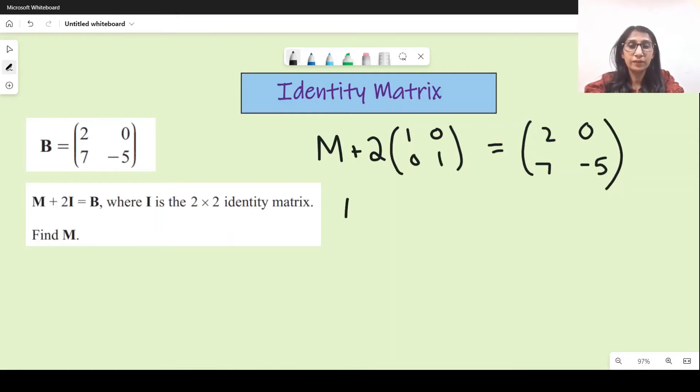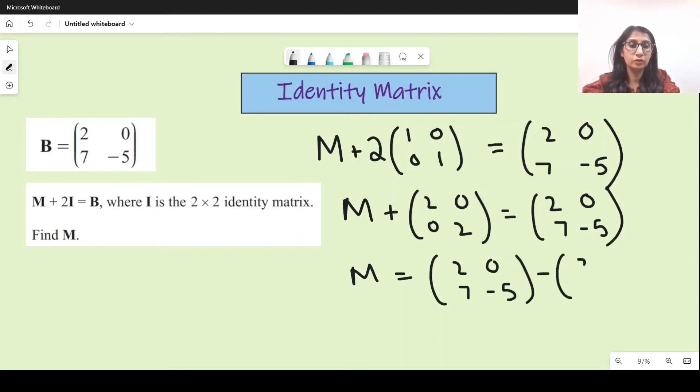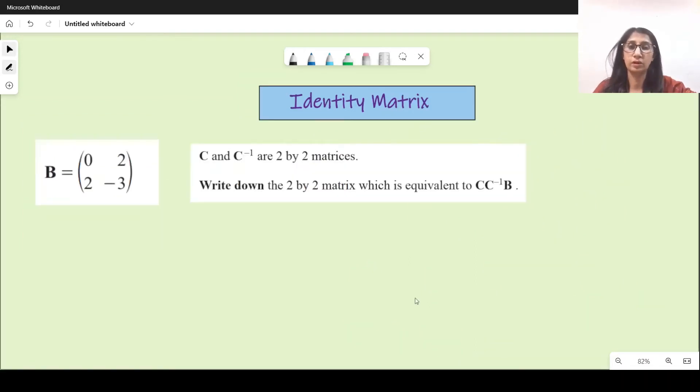So we need to find M. M plus this becomes two zero zero two equals two zero seven minus five. Now this goes to the other side and gets subtracted, so M equals two zero seven minus five minus two zero zero two. Now you subtract the individual values: two minus two is zero, zero minus zero is zero, seven minus zero is seven, and minus five minus two is minus seven. So this is the answer for M.